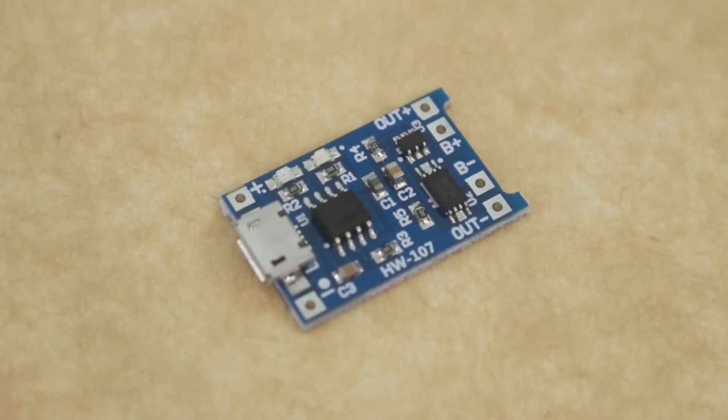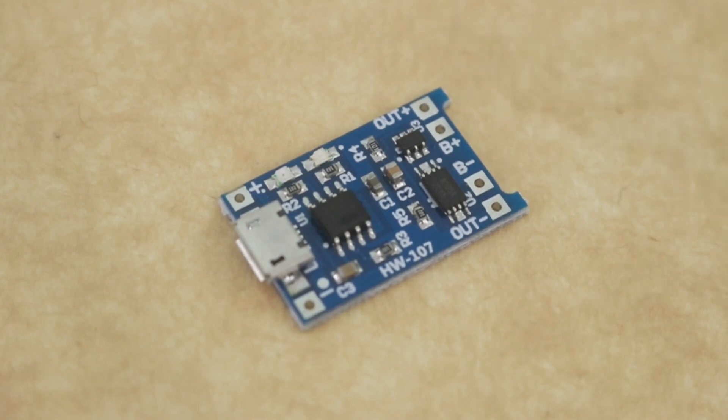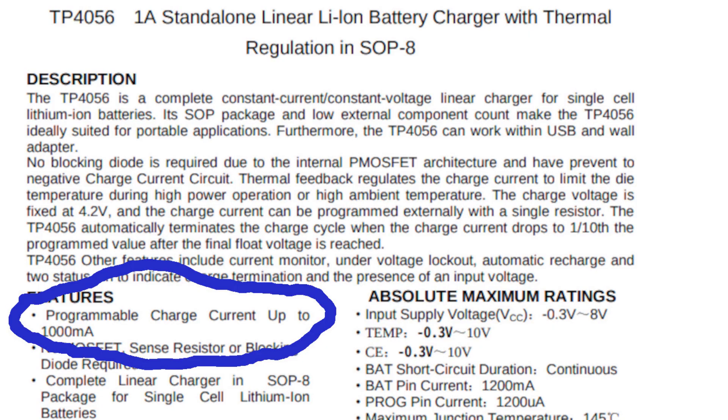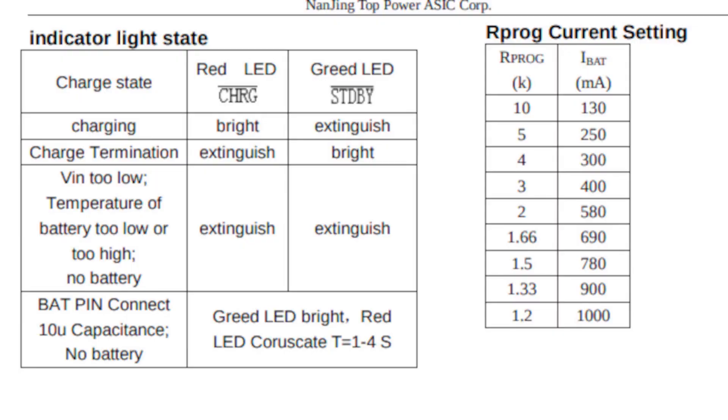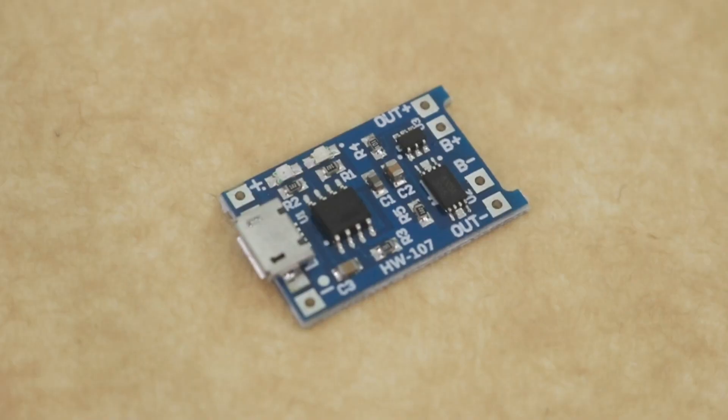And indeed that is the case. If you look at the data sheet of the chip, you can see that there is a resistor that manages the charge current. Changing the value of this resistor will change the output current.